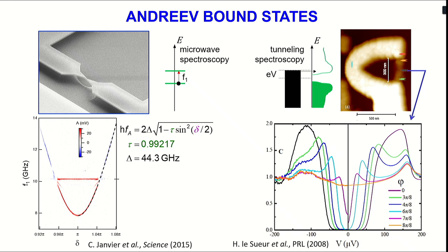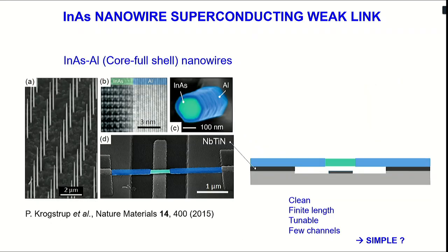So in between those two limits, one can wonder what happens and if it's possible to understand intermediate situations. This is why we started to measure weak links which are made with those very nice nanowires grown in Copenhagen, in which you have a very good and very perfect interface between a semiconductor — indium arsenide — and a thin layer of aluminum, which in our case is all around the semiconductor. The structure that we make is a nanowire where the aluminum has been etched away in a section which is about 500 nanometers long.